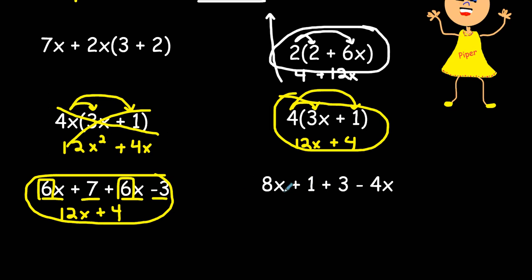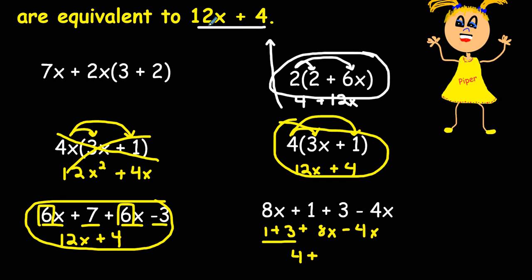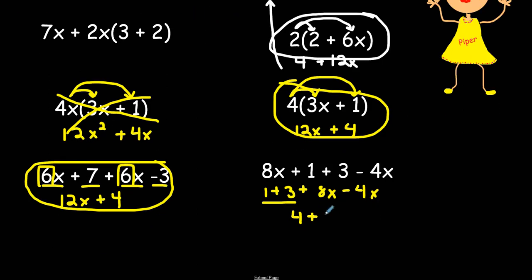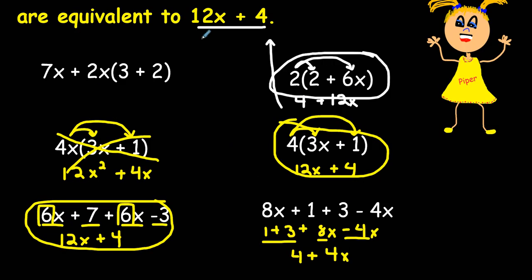And on this last one I'm just going to reorder these numbers and rewrite them using my commutative property so I can combine or group my like terms together. 1 plus 3 does give me 4 so that's the constant I'm looking for, 4. Now I need to see if I get 12x. 8x minus 4x actually equals 4x. Remember we're just subtracting the coefficients here. So the equivalent expressions are this one, this one, and this one.